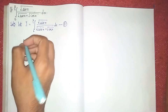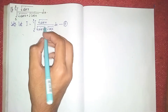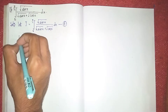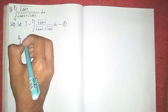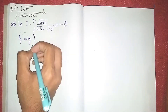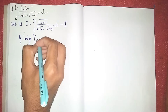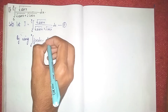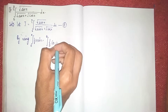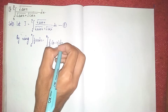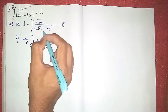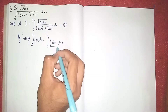Now we are using one formula — a property: the integral from 0 to a of f(x) dx is equal to the integral from 0 to a of f(a − x) dx. We are using this formula for simplifying the trigonometric ratio within this given integral. We are applying this property now.